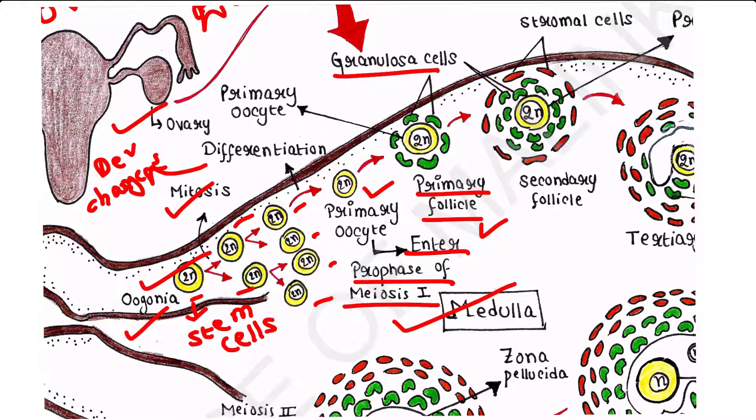A large number of these primary follicles degenerate during the phase from birth to puberty. Large number of primary follicles will die. Therefore, at puberty, only 60,000 to 80,000 primary follicles are left in each ovary. But otherwise no change will occur in these primary follicles.